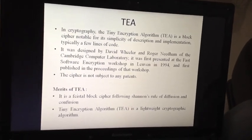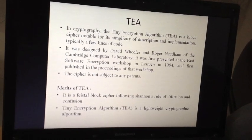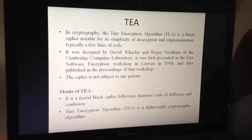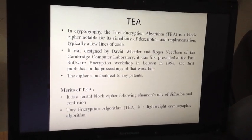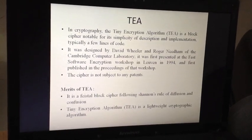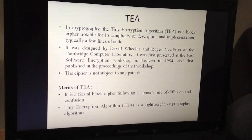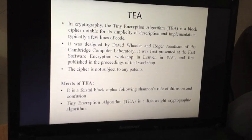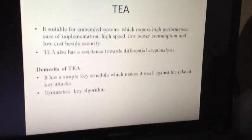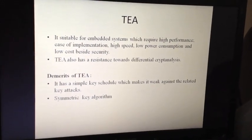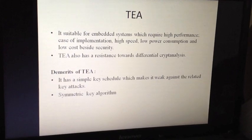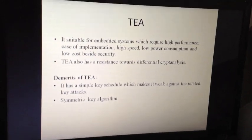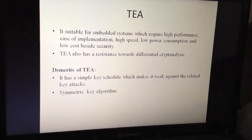TEA created a lot of ripples because it offered advantages such as ease of implementation, very less delay in computation, very less power consumption, very less cost, and also resistance to differential cryptanalysis that made it very strong. It was a very lightweight cryptographic algorithm because it included only seven lines of code originally, and that code included basically a loop on a Feistel block repeated in 64 cycles. It was based on Shannon's rule of diffusion and confusion.